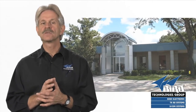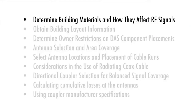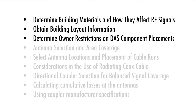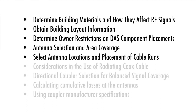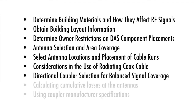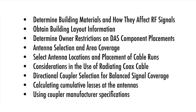Selecting the appropriate directional coupler is only one step in good DAS design. The other steps are: determine building materials and how they affect RF signals; obtain building layout information; determine owner restrictions on DAS component placements; antenna selection and area coverage; select antenna locations and placement of cable runs; consideration in the use of radiating coax cable; directional coupler selection for balanced signal coverage; calculating cumulative losses at the antennas; and using coupler manufacturer specifications.